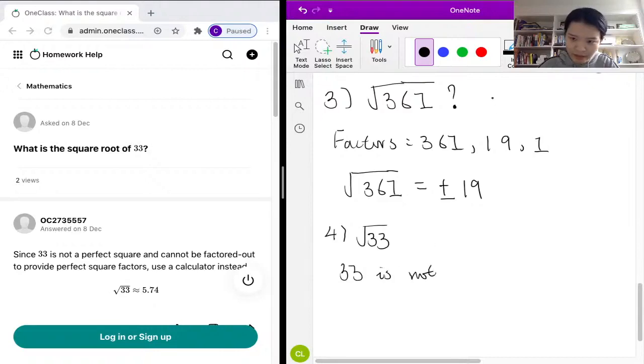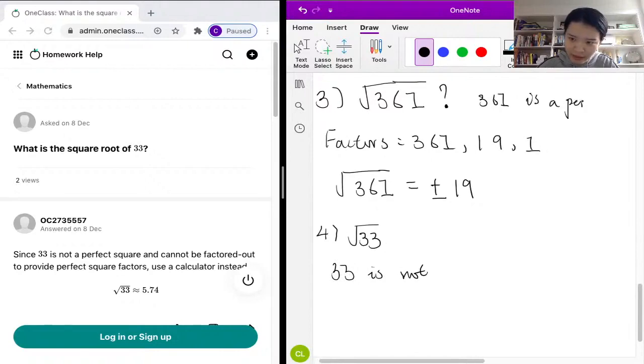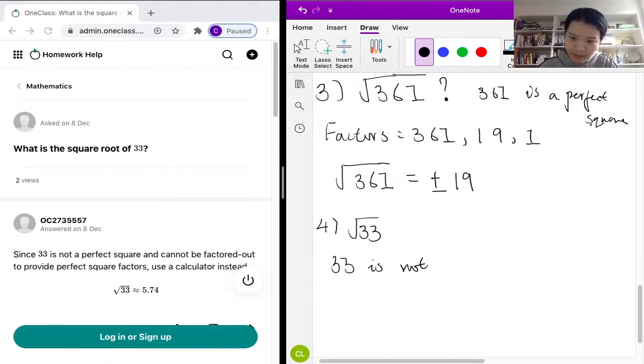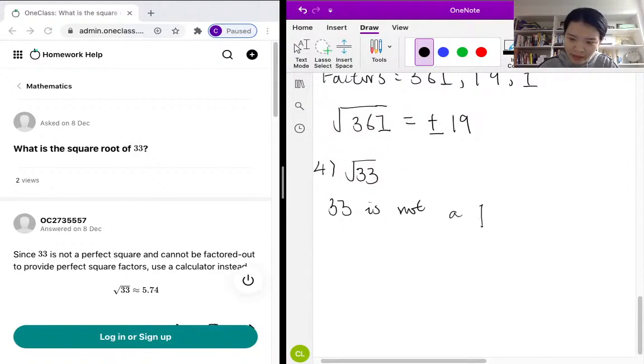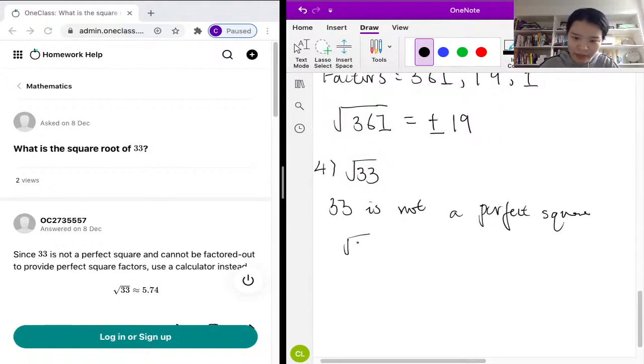361 is a perfect square, but 33 is not a perfect square. So in order to find the square root of 33, we can only use a calculator, although we can estimate it.